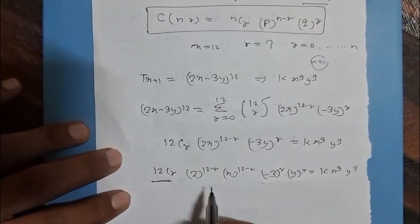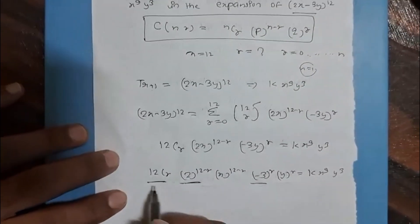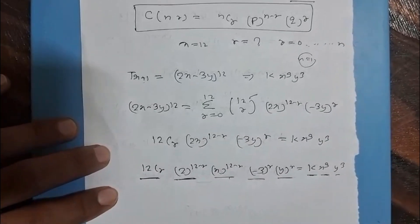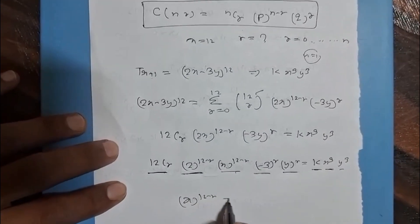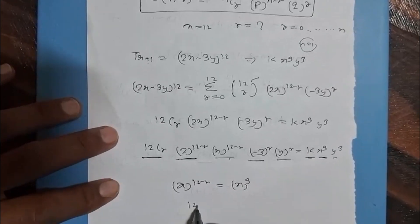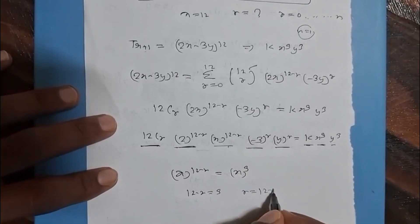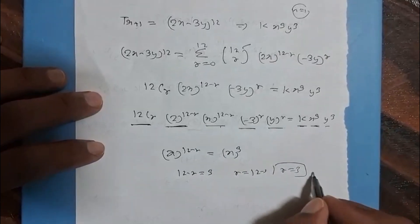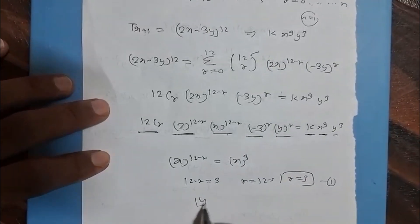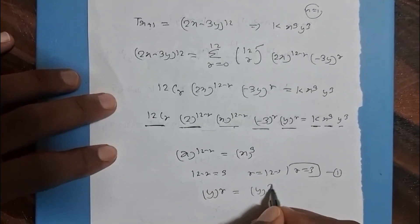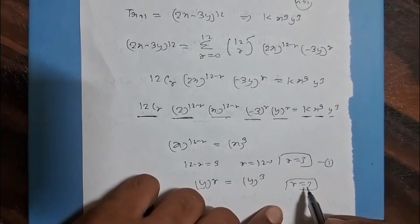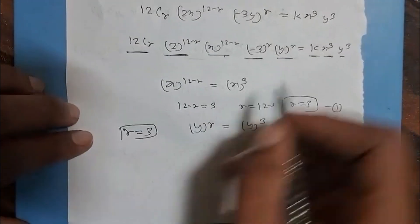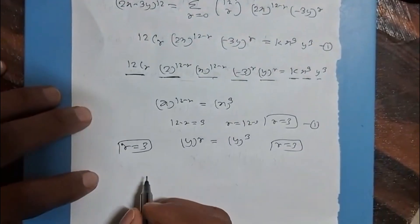We can see that 12Cr, 2 to the power (12 minus r), and (minus 3) to the power r are all constant terms, which we can compare to k. The variables give us: x to the power (12 minus r) equals x to the power 9, so 12 minus r equals 9, giving r equals 3. Similarly, comparing the y terms, y to the power r equals y to the power 3, so r equals 3. In both cases, r equals 3.